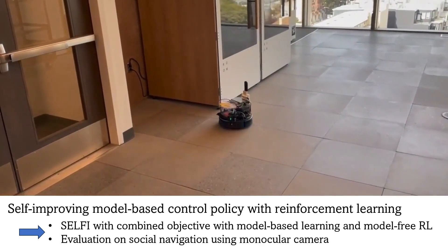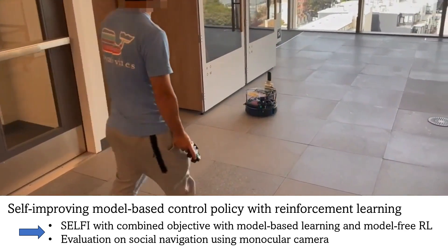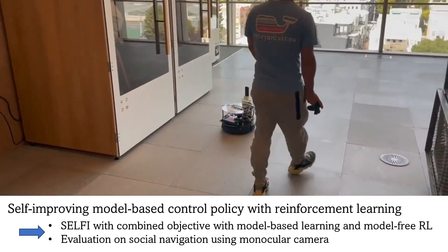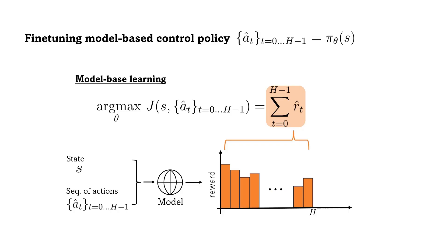In our evaluations, we apply SELFIE on top of the Saxon policy for social navigation with a monocular camera. SELFIE enables us to fine-tune a control policy pre-trained with model-based learning. In model-based learning, we estimate the reward via a dynamic forward model and efficiently train a control policy by maximizing the sum of rewards received in a limited horizon. By itself, model-based learning is insufficient due to the inaccuracies arising from modeling over a constrained horizon.